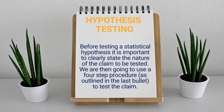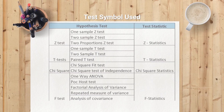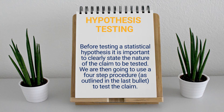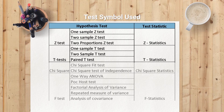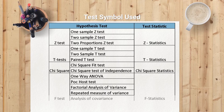Hypothesis testing uses a quasi-detective procedure to judge claims about parameters. Before testing, it is important to clearly state the nature of the claim, then use a four-step procedure. Tests include the z-test (one-sample, two-sample, two-proportion), t-test (one-sample, two-sample, paired), chi-square test (goodness of fit, independence), and F-test, which covers one-way ANOVA, post-hoc tests, factorial ANOVA, and repeated measures ANOVA.